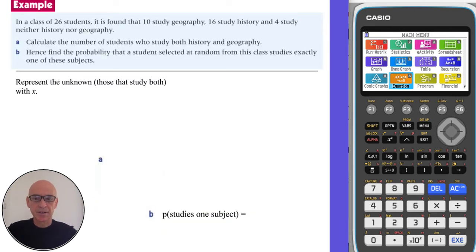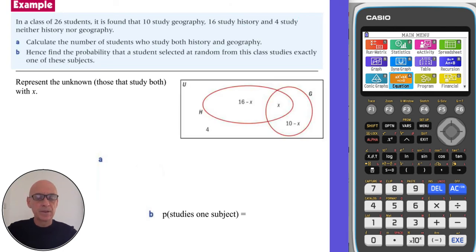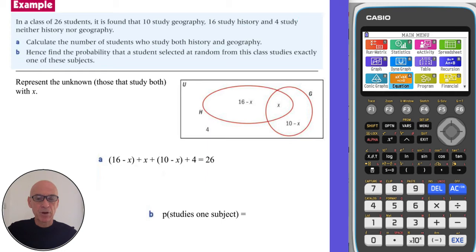In this question we're asked to calculate the number of students who study both history and geography. We use algebra, placing x in the intersection, which means there are (16 − x) students who only study history and (10 − x) who only study geography, plus 4 students who study neither. We write an equation adding all sections of the Venn diagram, and the total must equal 26. Solving algebraically gives x = 4. Alternatively, you can use the equation solver on your calculator.